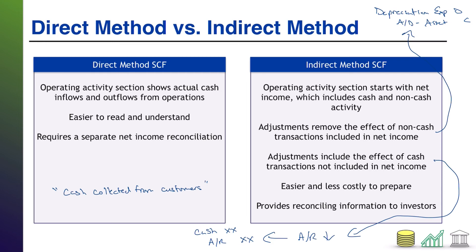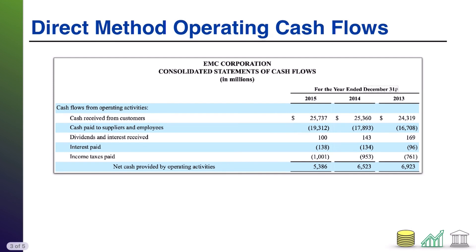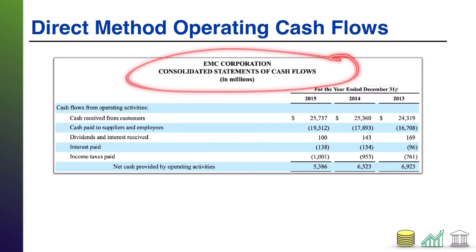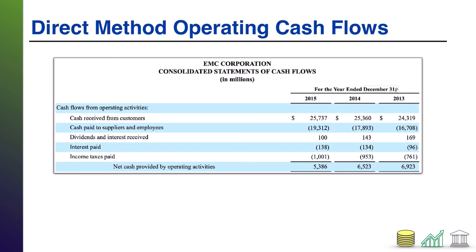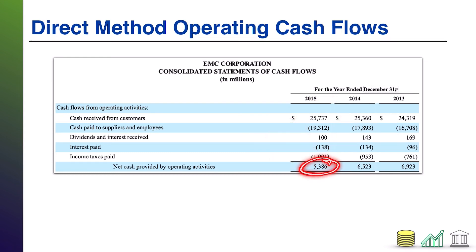To show two examples of what this looks like in real life: here's a financial statement for EMC Corporation — a bit outdated, but a valid example. Notice their operating activity section says 'cash flows from operating activities': received from customers, paid to suppliers and employees, dividends received, interest paid, income taxes paid. It's all very straightforward — they just show you the amounts, cash in or cash out, and then subtotal it as 'net cash provided by operating activities.' That's a direct method operating cash flow section.